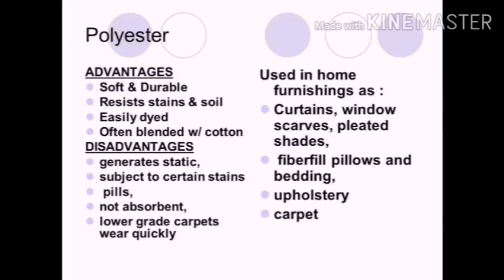Advantages of polyester: it is soft and durable, resists stains and soil, easily dyed, and can often be blended with wool or cotton. Terilene is a popular polyester that can be drawn into very fine fibres woven like any other yarn. Disadvantages: it generates static electricity, subject to certain stains and pilling, not absorbent, and lower-grade carpets wear quickly.